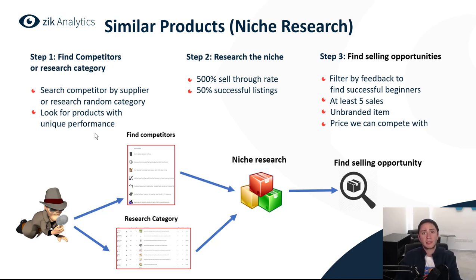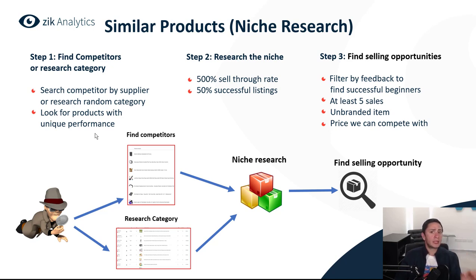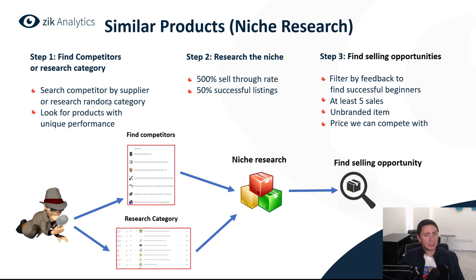You want something that lights the bubble above your head and sends you the signal that yes, this is an interesting product — I should research this niche. Once you find a product with unique performance, copy the keywords that define the niche. For example, with sunglasses, it could be vintage sunglasses, women's sunglasses, etc. Then go to product research and search for those two, three, or four keywords.